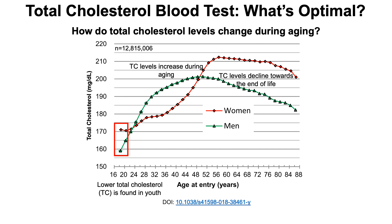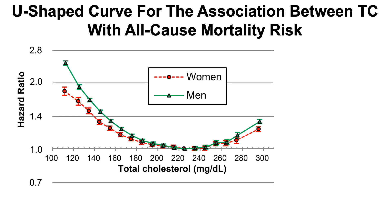Using data from the same study, we can see that there's a U-shaped association between total cholesterol levels and all-cause mortality risk — risk of death for all causes, including cardiovascular disease, cancer, respiratory diseases, all combined. Lowest risk of death for all causes, as highlighted here by the red arrows, is found for total cholesterol levels between 210 to 249 milligrams per deciliter.